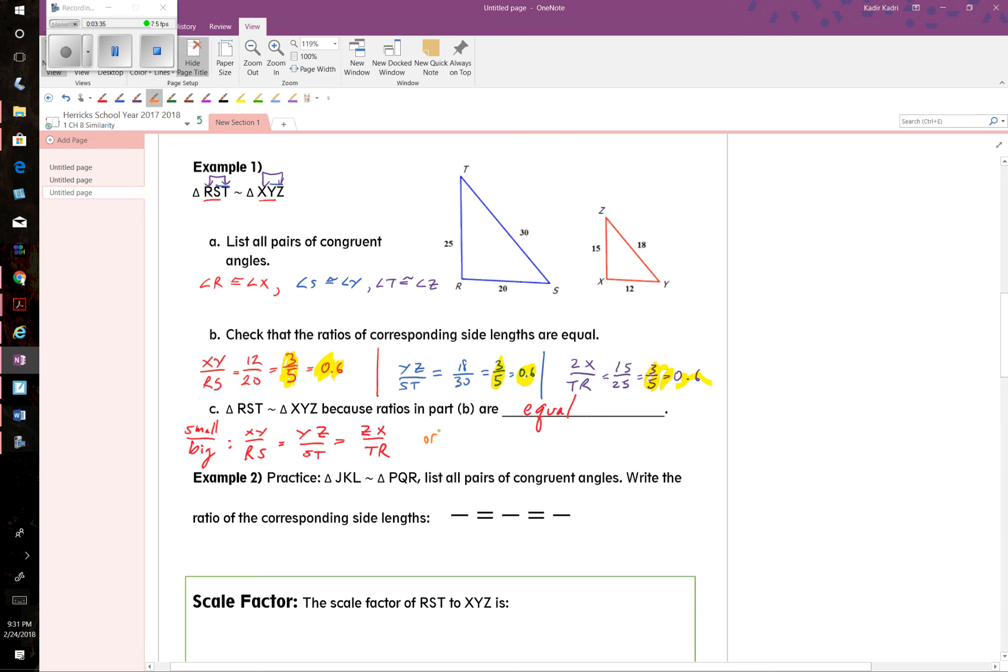Or we could have done it this way where we put the big one on top and the small on the bottom. And as long as we stayed consistent, it'll be RS over XY should be equal to ST over YZ, which is equal to TR over ZX. And with this, whichever way we did it, all those ratios should be equal.